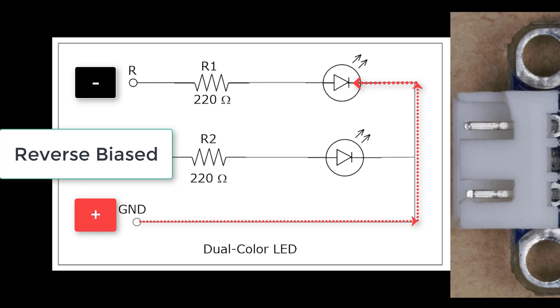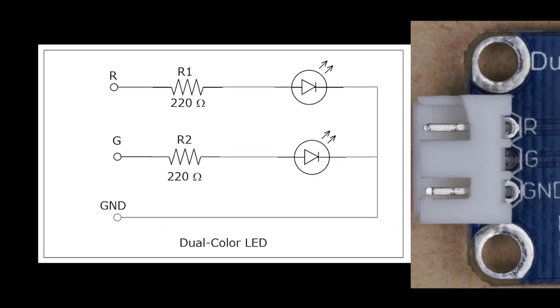When we reverse the polarity and put the positive on the ground side, this is known as reverse biased. A reverse biased LED does not illuminate. There is no current flowing through this circuit because the LED is preventing current from flowing in that direction. Because no current is flowing, we cannot emit light from the LED.